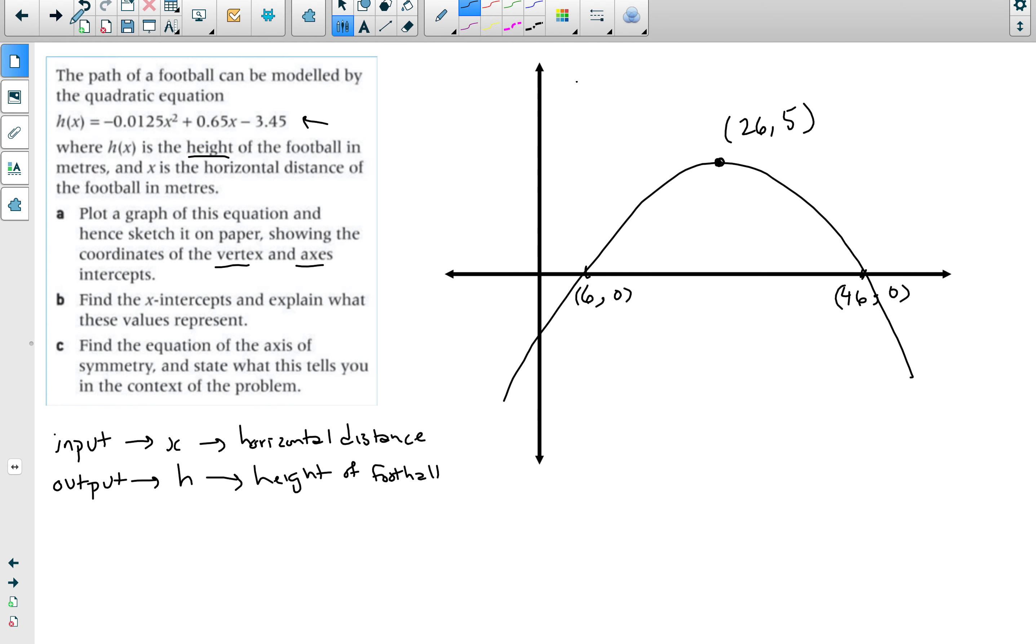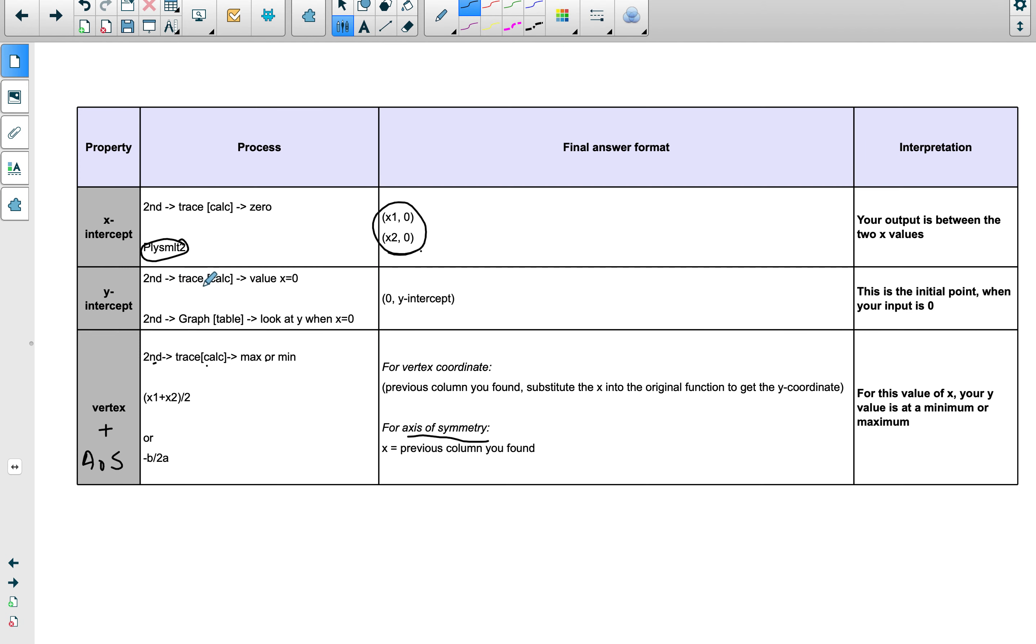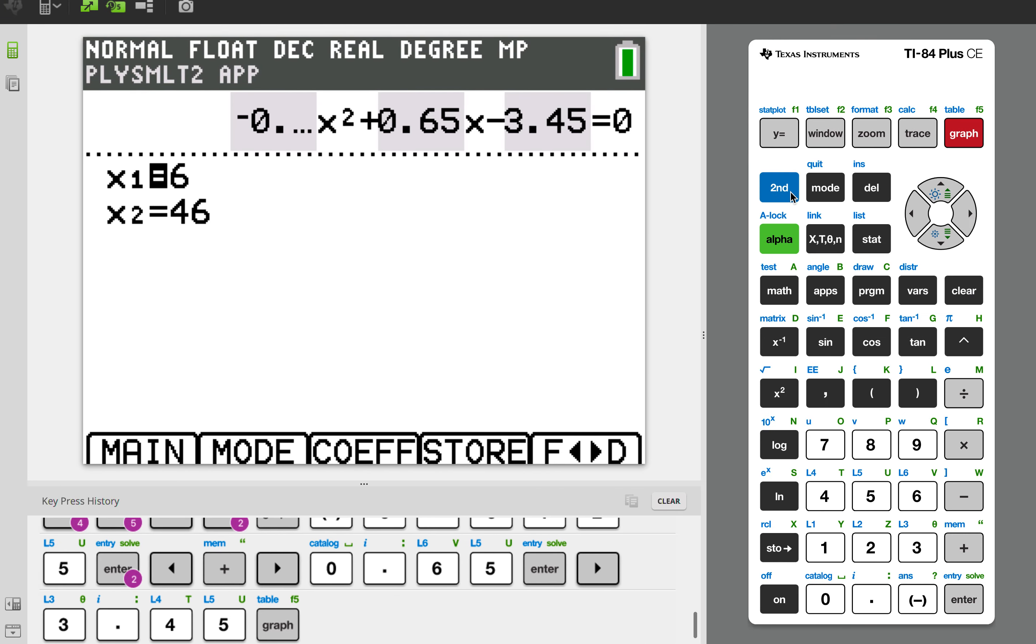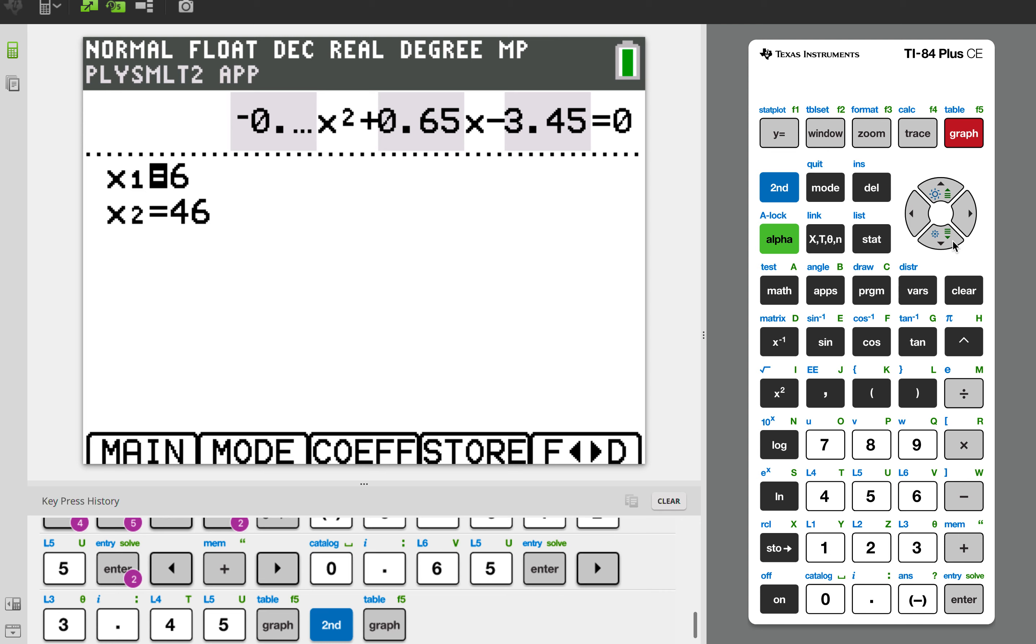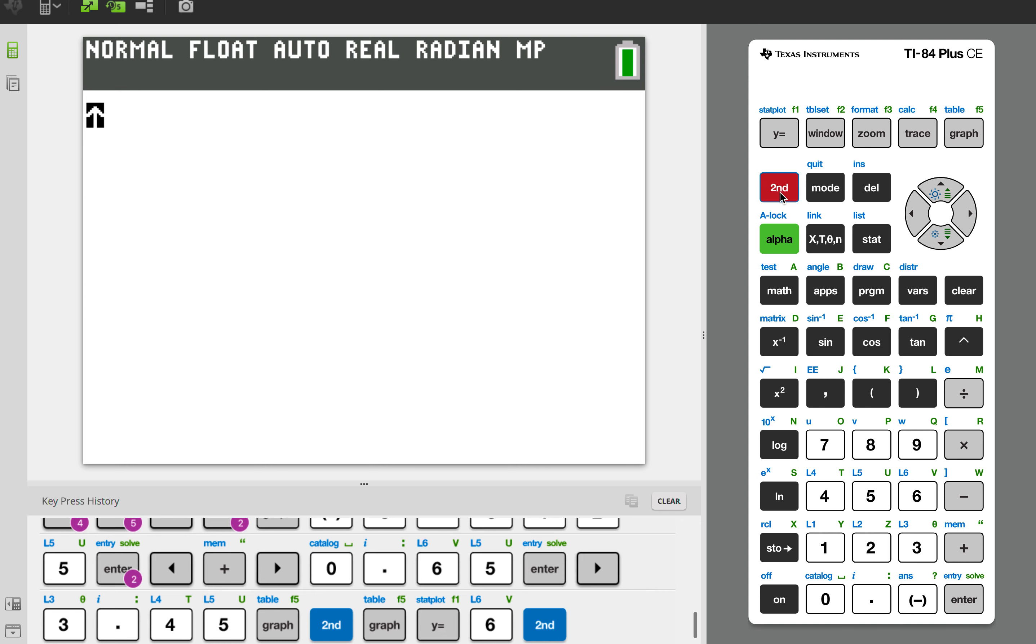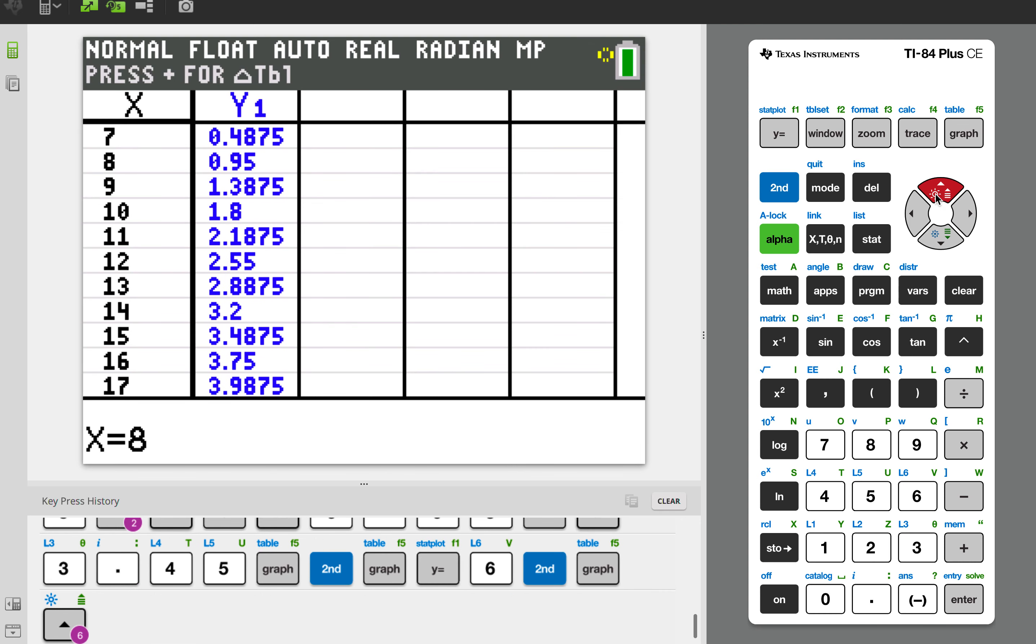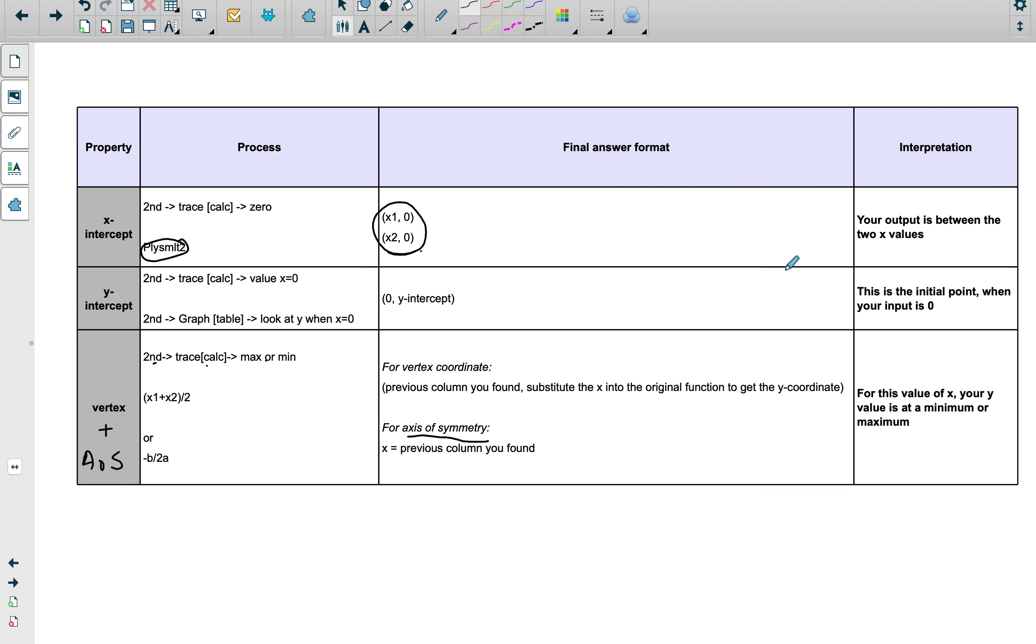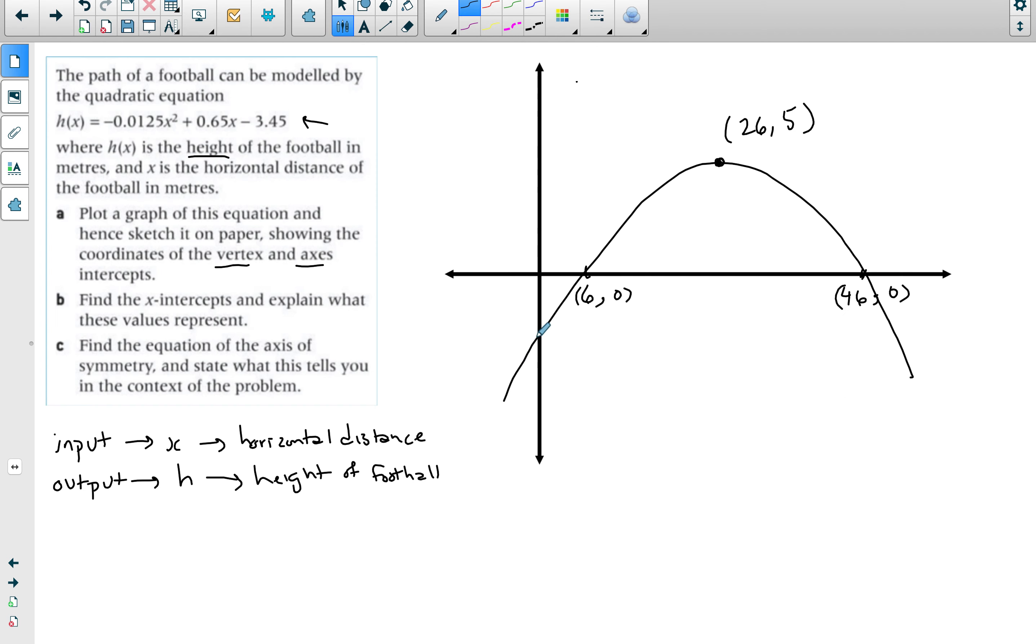Finally the y-intercept. To find the y-intercept you either go to second trace and enter the value x equals 0, or go to the table and look at the y when x equals 0. I'm going to quit this and go to second table. When my x is equal to 0, my y is negative 3.45. Or if you know the parameters, it should be equal to the c-value. So once we have all of these we've graphed it and sketched it, that's all good.